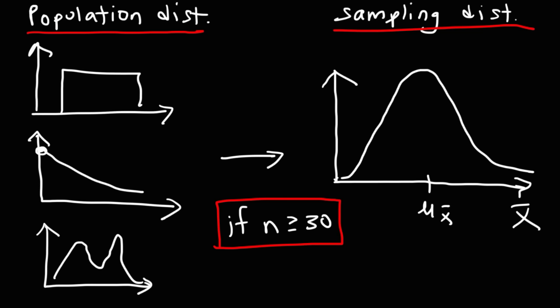The sampling distribution of the sample means is simply a probability distribution where the sample mean is plotted on the x-axis. Since it approximates a normal distribution according to the Central Limit Theorem, we can use the z-table to make probability calculations. For example, to find the probability that a sample mean falls between a and b, we use z-tables to get the area under the curve.